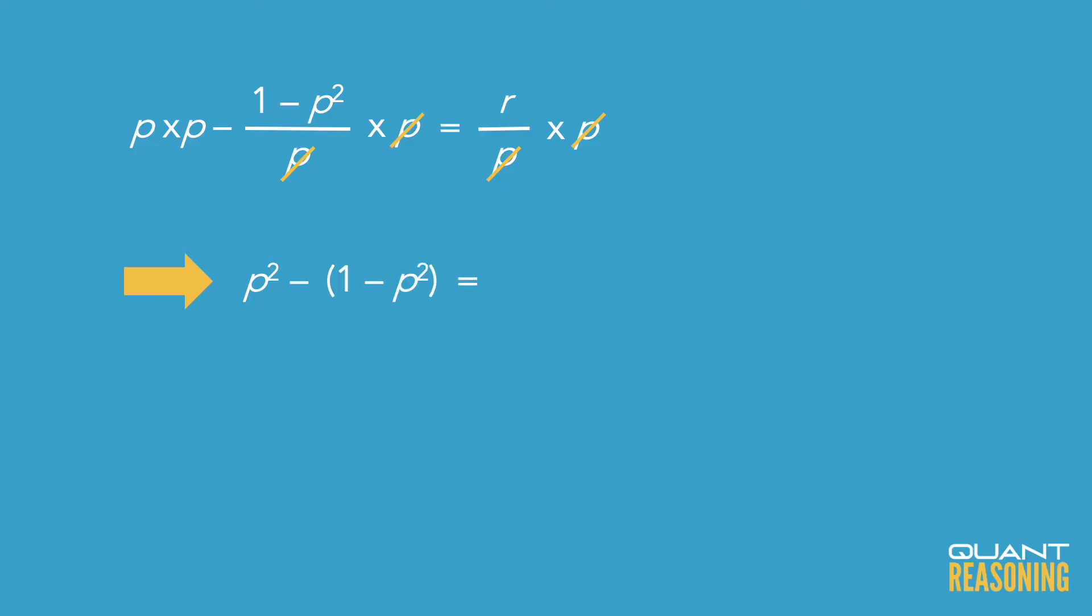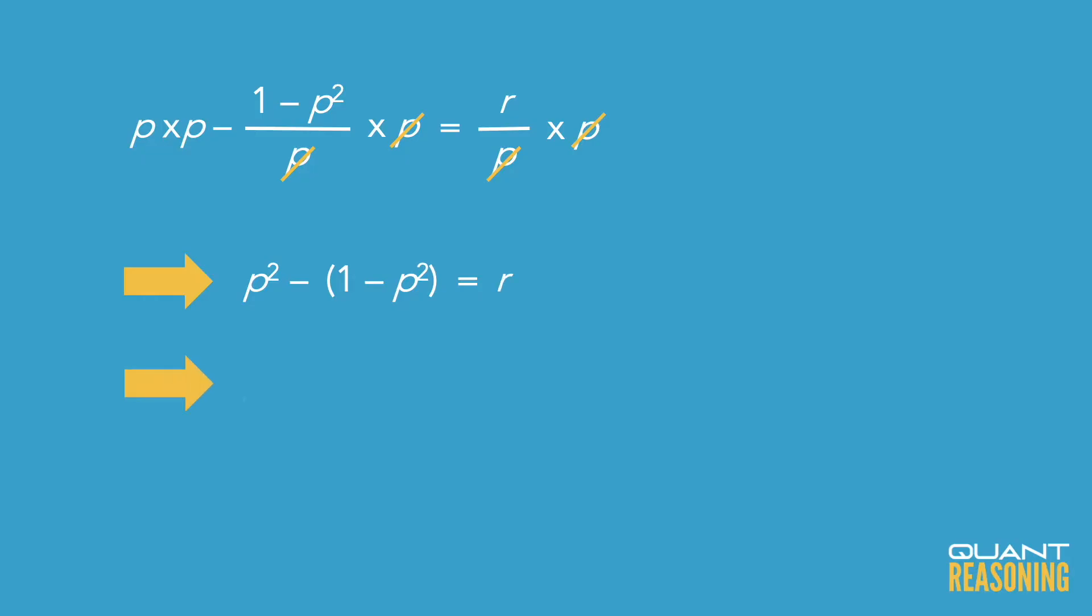So we have p squared minus parentheses 1 minus p squared. Now when we open up these parentheses, you end up with p squared minus 1 plus p squared, because minus minus there turns into plus.